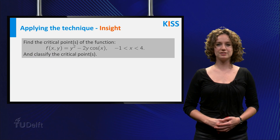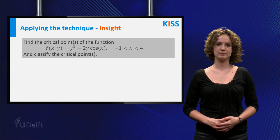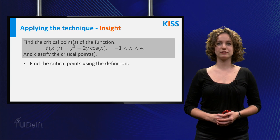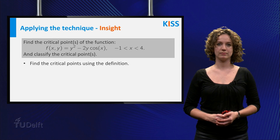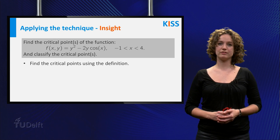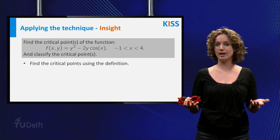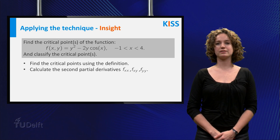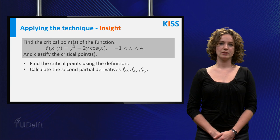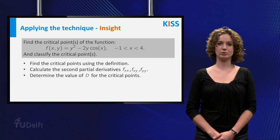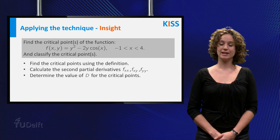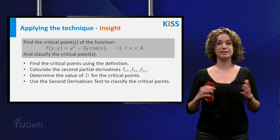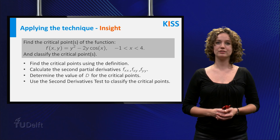You are now ready to show you have Insight into the problem by developing a plan. The first step is to find the critical points by finding the partial derivatives of f and calculating the points where they equal zero. Next, check if the partial derivatives are not defined for certain values of x and y, because critical points can also appear at these points. The second step is to calculate the second partial derivatives and compute the determinant of the critical points. Once you know the determinant and the value of the second partial derivative of f with respect to x, you can classify the critical points using the second derivatives test.